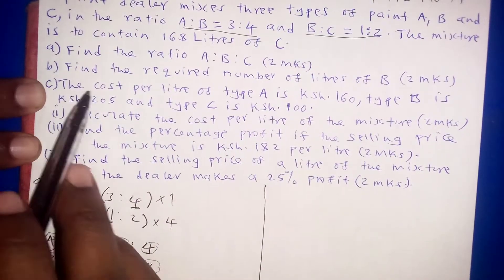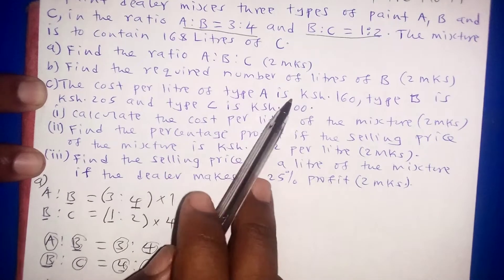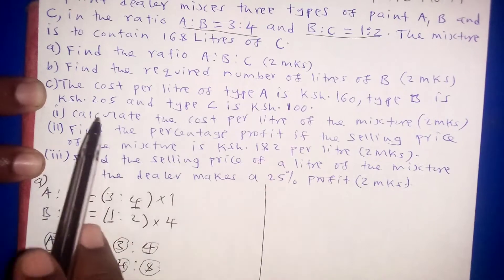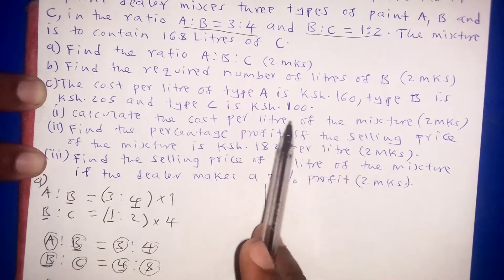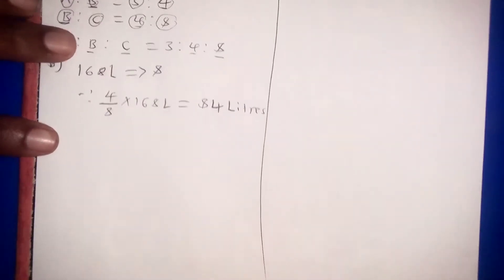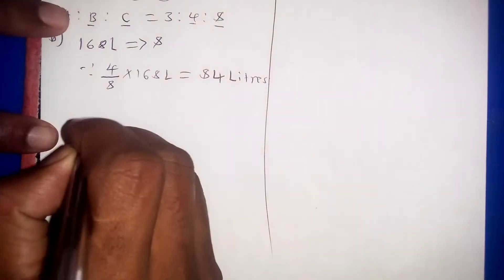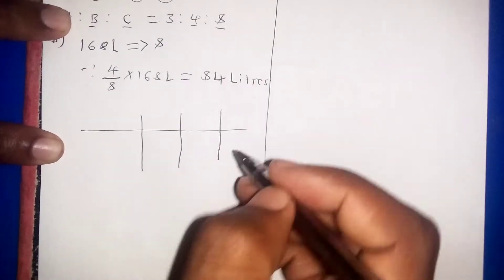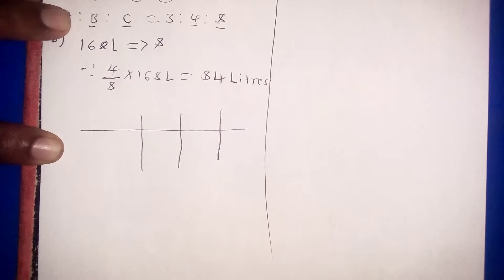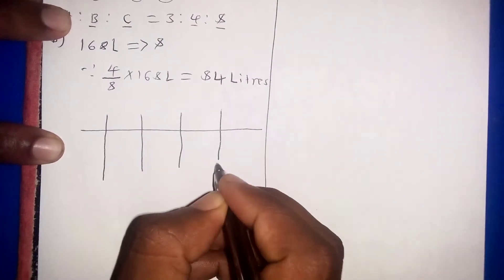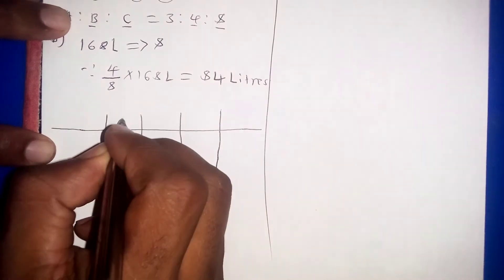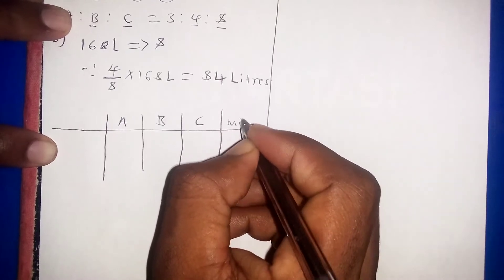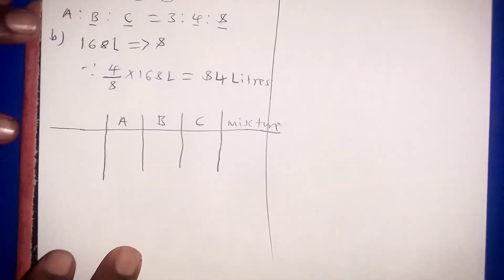For Part C, we are given that the cost per liter of type A is 160 shillings, type B is 205 shillings, and type C is 100 shillings. We calculate the cost per liter of the mixture using a table with columns for the ratio of A, ratio of B, ratio of C, and the mixture.